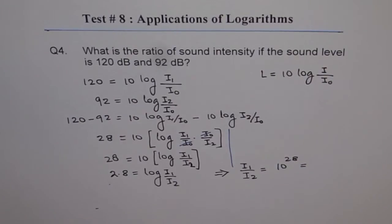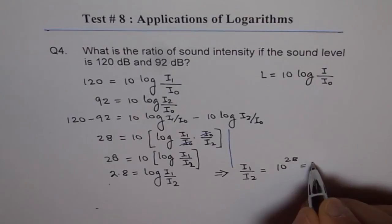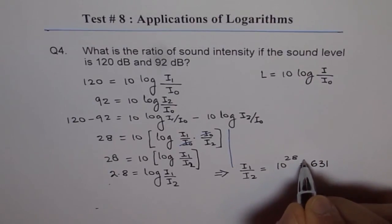And if you use a calculator, we can find 10 to the power of 2.8 is equal to 630.95. So we can write this as 631 approximately.